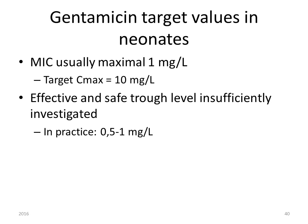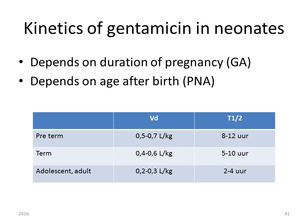In neonates, the MIC for gentamicin-susceptible microorganisms is usually maximally 1 mg per liter. With a target Cmax of 10 times the MIC, we aim at 10 mg per liter. Trough levels are insufficiently investigated; in practice we aim at 0.5 to 1 mg per liter. Compared to adults and adolescents, preterm neonates have a much higher volume of distribution for gentamicin — 0.5 to 0.7 liters per kilogram — while term neonates have a somewhat lower value of 0.4 to 0.6 liters per kilogram.